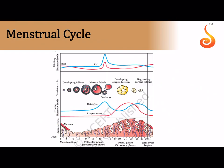The menstrual cycle is a 28-day cycle in female primates including humans. The first three to five days is menstruation, during which the endometrium becomes thin. The next phase is the follicular phase, during which LH and FSH rise, both reaching a peak on day 14. This LH surge on day 14 causes the mature follicle to rupture and the secondary oocyte to be released — a process called ovulation. The ruptured Graafian follicle then forms the corpus luteum.